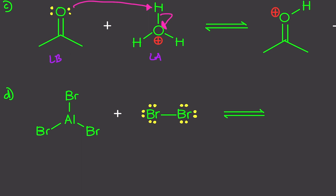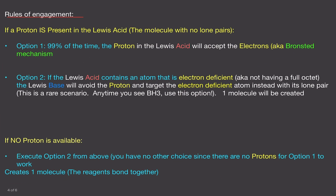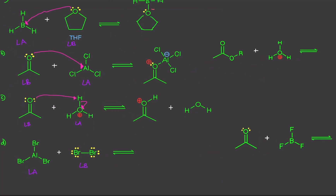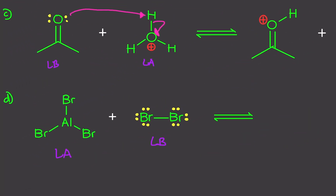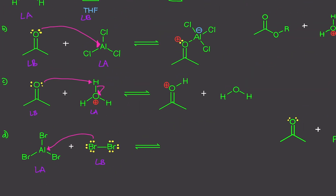Practice problem D: the one with the electrons drawn in is the Lewis base, and this is the Lewis acid. The Lewis acid has no hydrogens — no protons available — so we execute the bottom option. We attack the center molecule, which is the most electron-deficient, and we create one molecule.